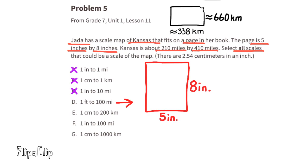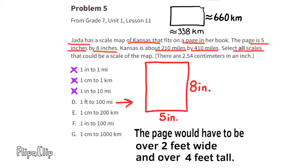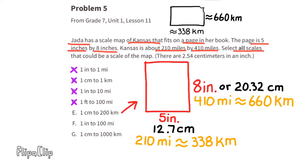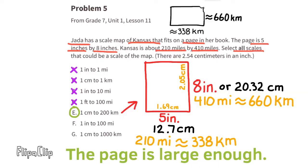Scale d: one foot to 100 miles. That would mean the page would have to be over two feet wide and over four feet tall, so that wouldn't work. Scale e: one centimeter to 200 kilometers. Five inches is 12.7 centimeters and eight inches is 20.32 centimeters. 210 miles is approximately 338 kilometers and 410 miles is approximately 660 kilometers. Placed vertically, Kansas is approximately 338 kilometers wide and 660 kilometers tall — we would have more than enough room to fit this map on the page.